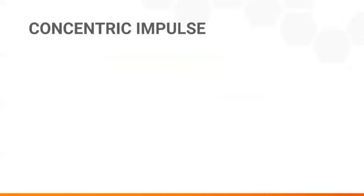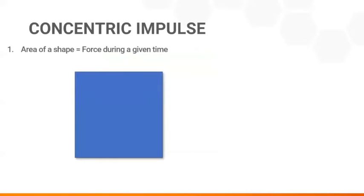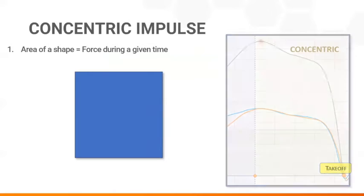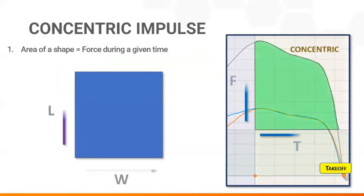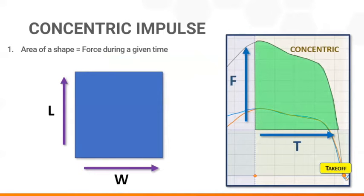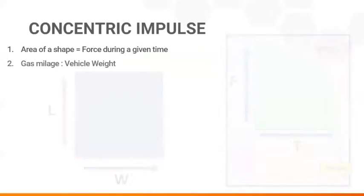As you recall, impulse is determined just like calculating the area of a shape. However, it yields only an absolute value of applied force. Without considering its effect on an object, we need to consider the relative effect of a given force to understand the outcomes.